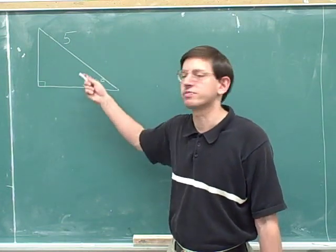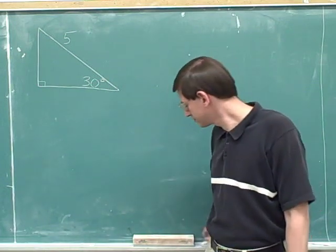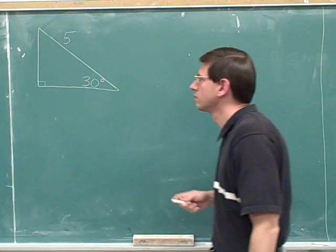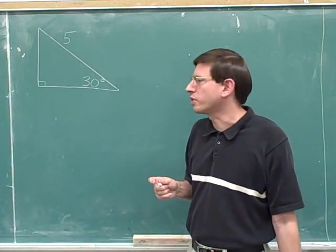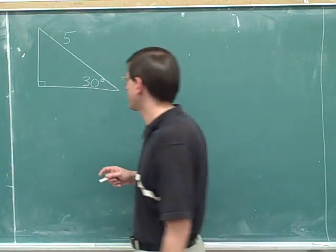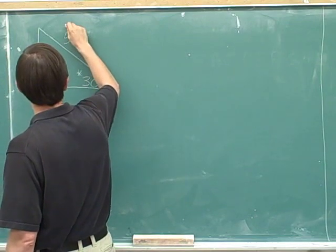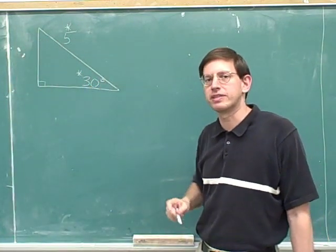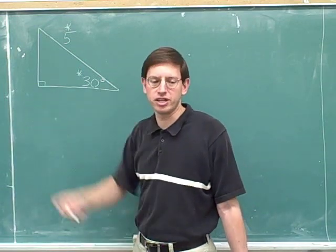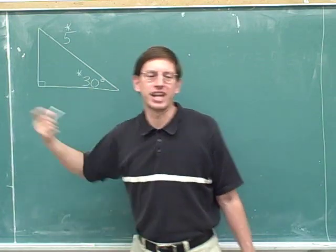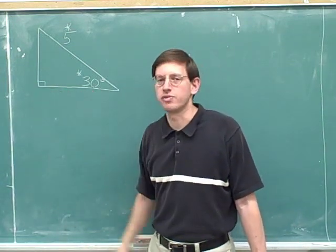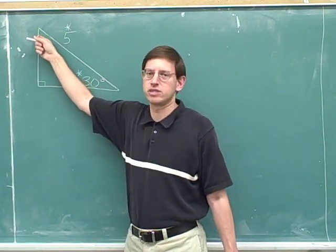We should be able to figure out all the other sides and angles from this information. I'm going to use asterisks to mark what we were given: the 30 degrees and the side of length 5. We're supposed to figure out everything else. We already know this angle is 90 degrees since it's a right triangle — so what I mean is we're given one angle in addition to the right angle. The easiest thing to figure out first should be the remaining angle.